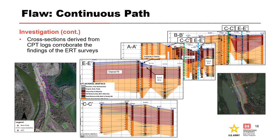Cross sections and profiles derived from CPT logs performed in 2002 and 2010 also aid in characterization of the foundation soils. Line B-B' is a profile of CPT borings along the riverside toe of the levee. Line A-A' is a profile just beyond the landside toe. Lines E-E' and C-C' are cross sections located near the observed distress in the northern area in 2011, and just north of the location of boils observed in the southern area in the 1990s and 2008, respectively. Together, the CPT profiles and cross sections indicate the presence of a continuous foundation sand layer at Buck Chute levee, corroborating the findings of the ERT surveys and aligning with the understood depositional environment of the lower Mississippi River Valley.